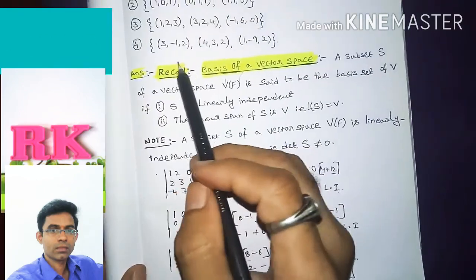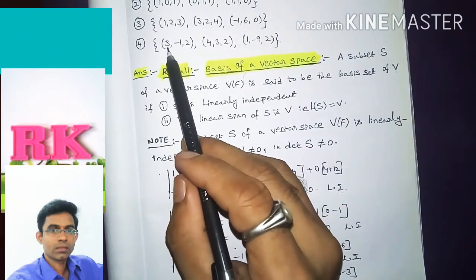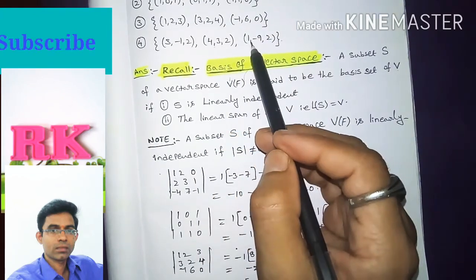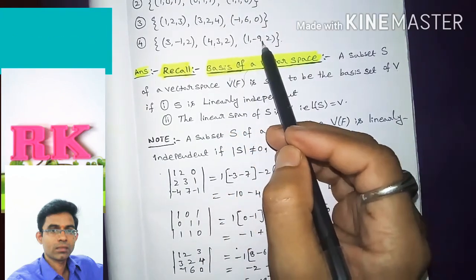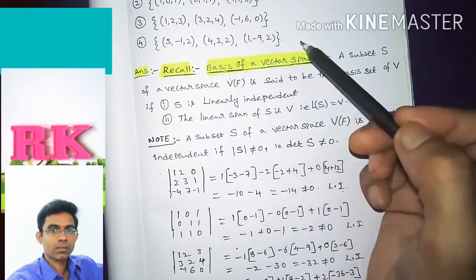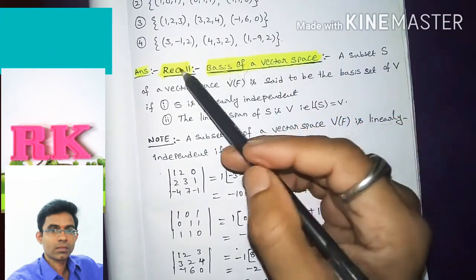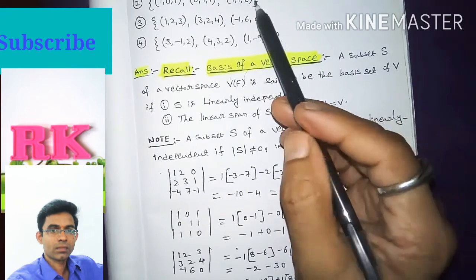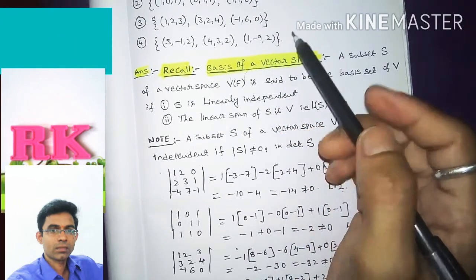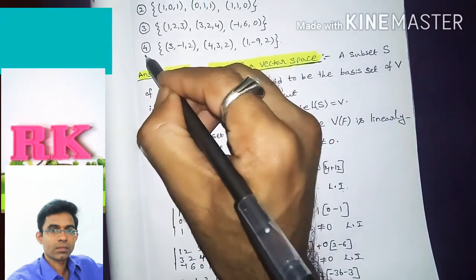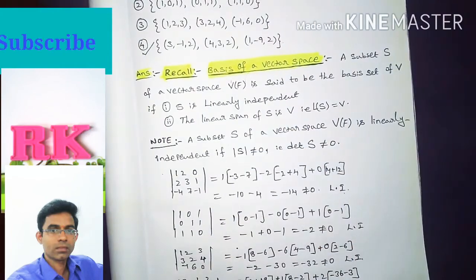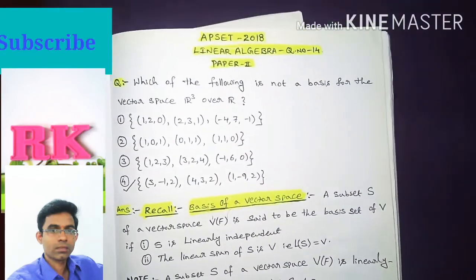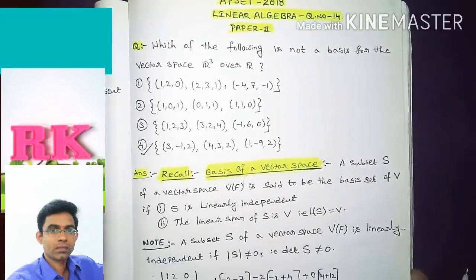Since the determinant of Option 4 — vectors {3,-1,2}, {4,3,2}, {1,-9,2} — equals 0, the set is linearly dependent and does not form a basis for R³ over R. Hence, Option 4 is the correct answer. I hope you liked this video. If you did, please share and subscribe. Thanks for watching.